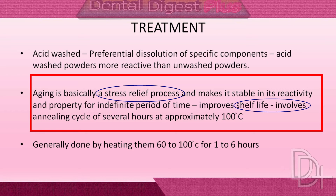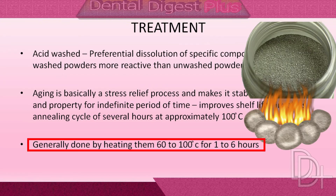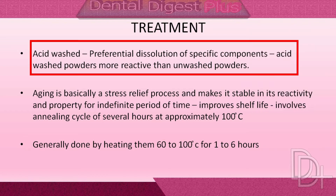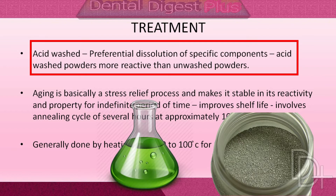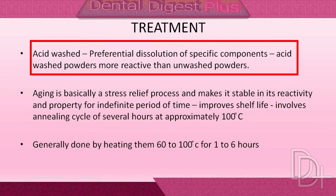At room temperature, the residual stress is relieved over a period of a week or a month. The alloy particles are aged by subjecting them to a controlled temperature of 60 to 100 degrees Celsius for 1 to 6 hours. Treatment of the alloy particles with acid has been a manufacturing practice for many years; amalgams made from acid-washed powders tend to be more reactive than those made from unwashed powders.